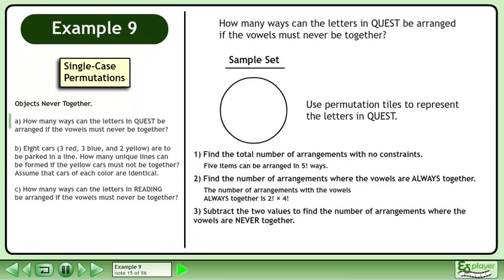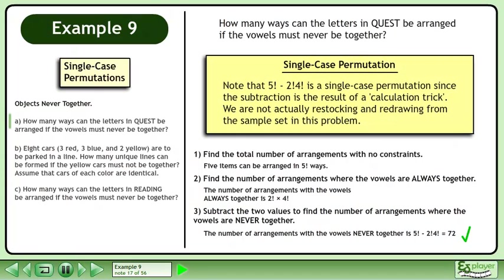And finally, subtract the two values to find the number of arrangements where the vowels are never together. The number of arrangements with the vowels never together is five factorial minus two factorial times four factorial, which equals 72. Note that this is a single case permutation, since the subtraction is the result of a calculation trick — we are not actually restocking and redrawing from the sample set in this problem.